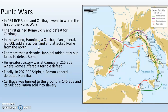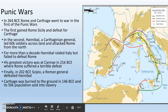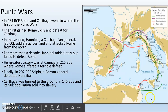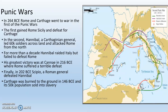In the second war, a Carthaginian general by the name of Hannibal leads 60,000 soldiers across land and attacks Rome from the north — Rome never saw this coming. They have to cross the Alps, some of the tallest mountains in the world, and Hannibal does it. For more than a decade, Hannibal raids Italy, attacks cities, and even attacks Rome itself. His greatest victory is at Cannae in 216 BCE, and Rome suffers a terrible defeat. But ultimately Romans beat back Carthage. In 202 BCE, the Roman general Scipio defeats Hannibal. Carthage is ultimately burned to the ground in 146 BCE; its 50,000 people are sold into slavery, and the Romans salt the earth — pouring tons of salt into the ground so it can't grow food and nobody could ever live in Carthage again.